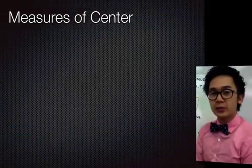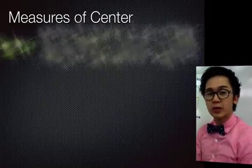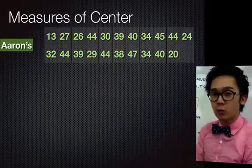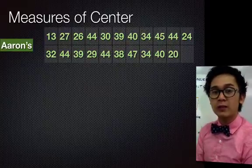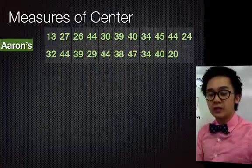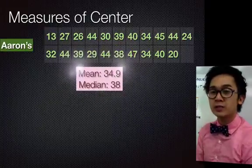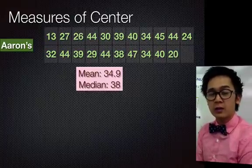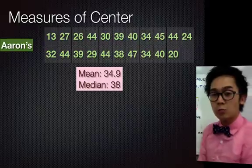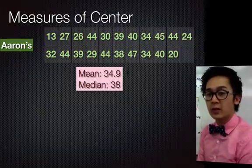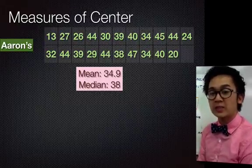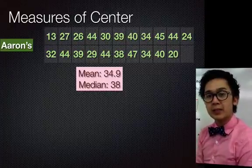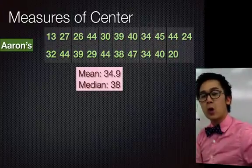Let's measure the center of their distribution, starting with Hank Aaron's homerun hits. If we compute the mean of Hank Aaron's homerun hits and the median of his homerun hits for the 16 seasons in Major League Baseball, the mean is 34.9 homerun hits and its median is 38.